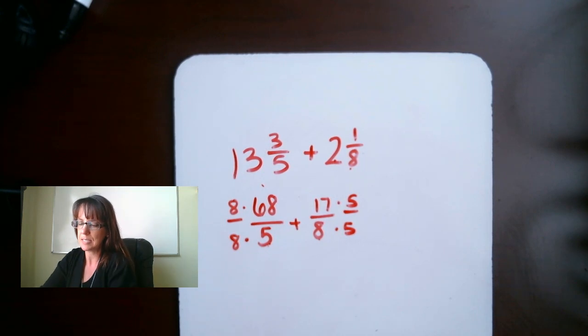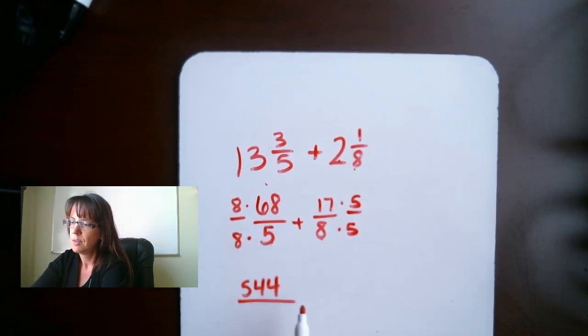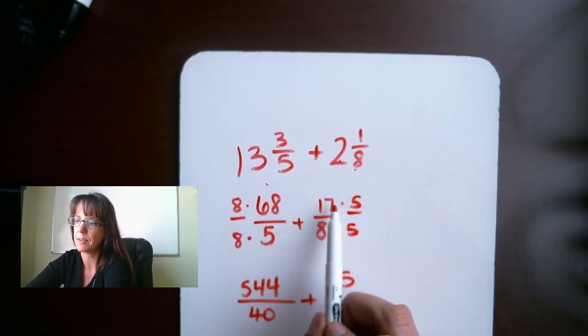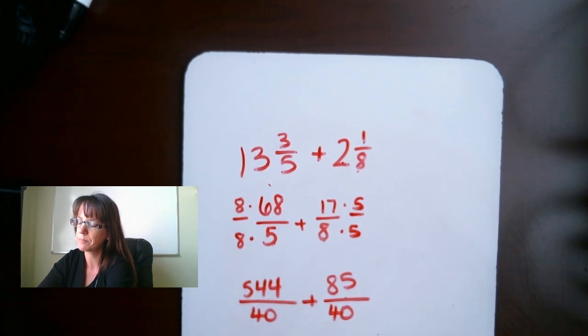So, now what I've got, 68 times 8, that gives me 544 over 40, plus 85, that's 17 times 5, gives us 85, over 40. Now we're going to add those two top ones. So, 544 plus 85 gives us 629.